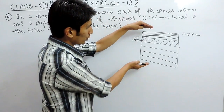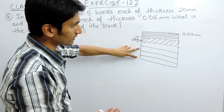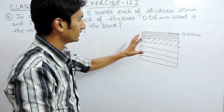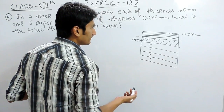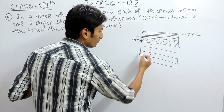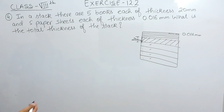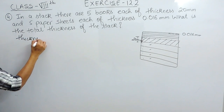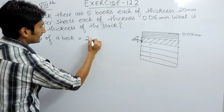Now you have to find the thickness of the total stack. To find the total thickness, first find the thickness of books and the thickness of the paper sheets, then add them to get your answer. Since each book has the same thickness, multiply the thickness of one book by 5. Similarly, find the thickness of the paper sheets. The thickness of one book is 20 mm.